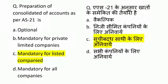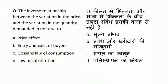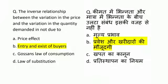The inverse relationship between the variation in price and variation in the quantity demanded is not due to — options are: price effect, entry and exit of the buyers, Gossen's law of consumption, and law of substitution. The correct answer is option number B — entry and exit of the buyers.